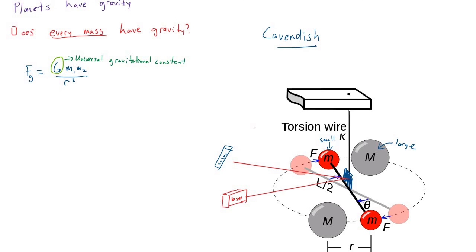So this experiment proved that it's not only big things like planets, but even masses that we can see and feel and handle ourselves, they also have gravity. And that this gravity is really a special property of these things that we call masses.